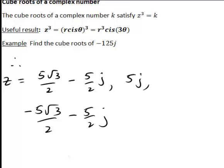So therefore these are our 3 cube roots of -125j. And for an exercise you might like to plot these cube roots on an Argand diagram. What you'll find is that they're actually evenly spaced, 120 degrees apart on the Argand diagram, and this in fact is always the case for cube roots of a complex number.